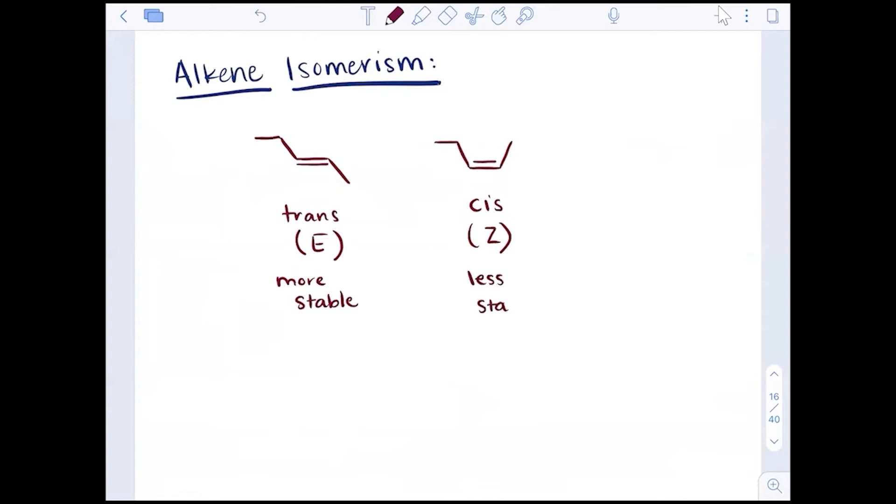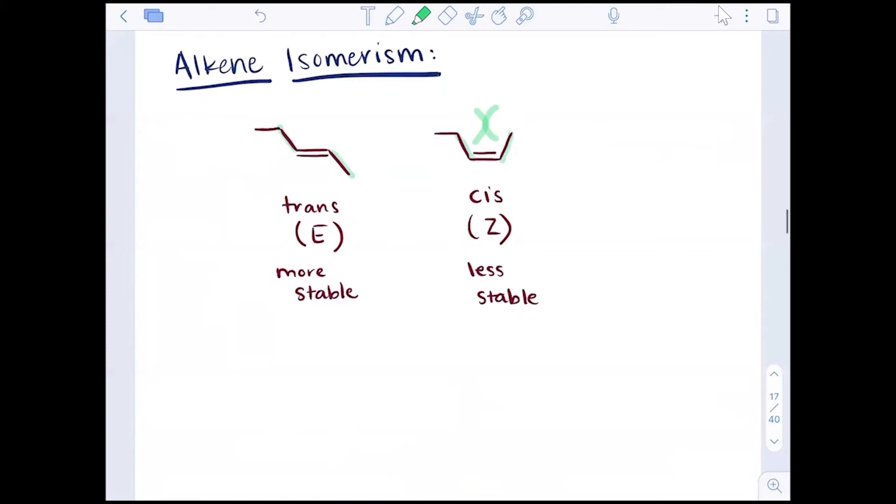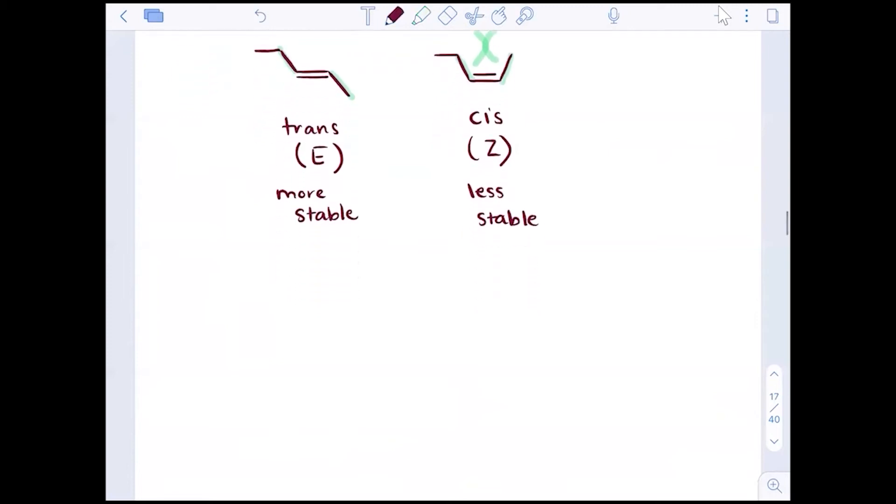And that is due to the fact of steric hindrance. The trans keeps those groups on opposite sides, whereas the cis puts the biggest groups or the higher priority groups together. And there's the steric hindrance bumping into each other on the same side idea. There's combustion data that goes with that.